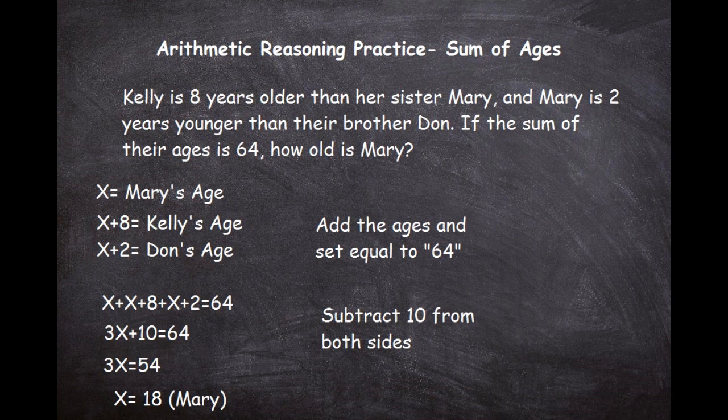If Mary's age is 18 — remember the first part said Kelly is eight years older than her sister Mary — so Kelly is 26. And if Mary is two years younger than their brother Don, then Don is 20, because 18 is two years younger than 20. If we add these three together: 18 plus 26 plus 20, we get 64. It checks out.